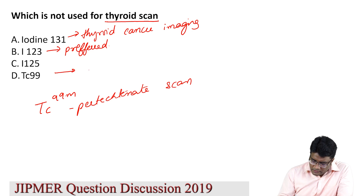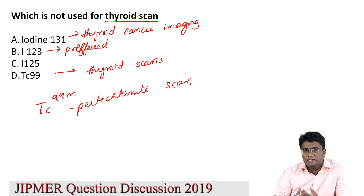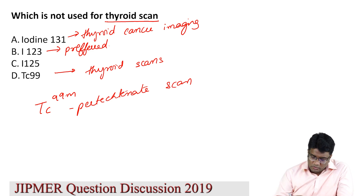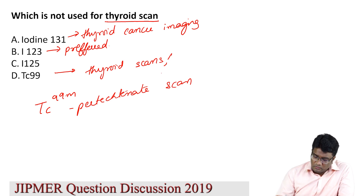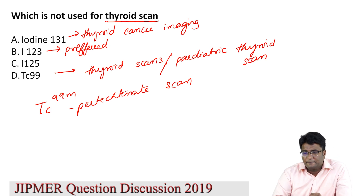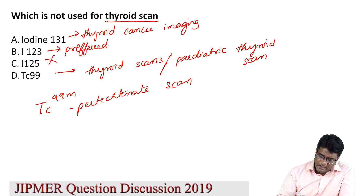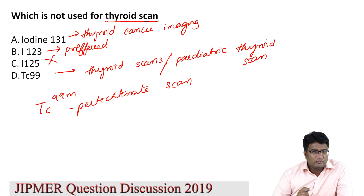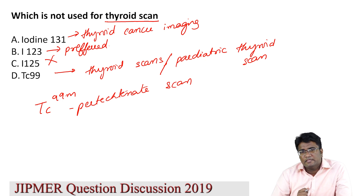Technetium 99m is used for thyroid imaging especially in India where iodine 123 is not easily available. Technetium 99m is very easily available, so we use it for thyroid scanning. It is particularly preferred in the pediatric population — for pediatric thyroid scanning we generally go for technetium 99m pertechnetate scan. We do not use iodine 125 for thyroid scanning.